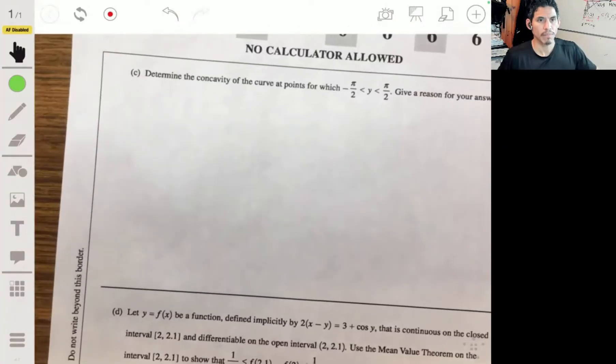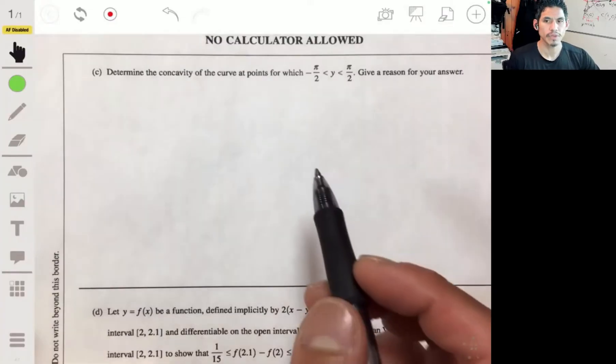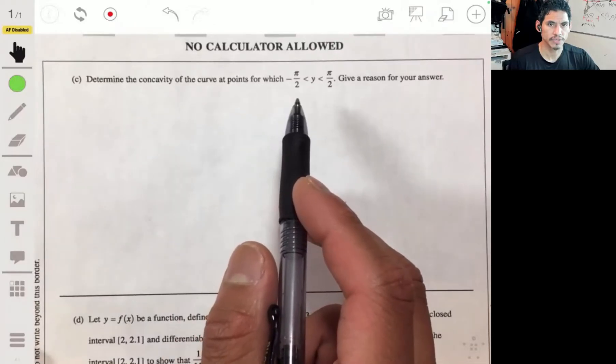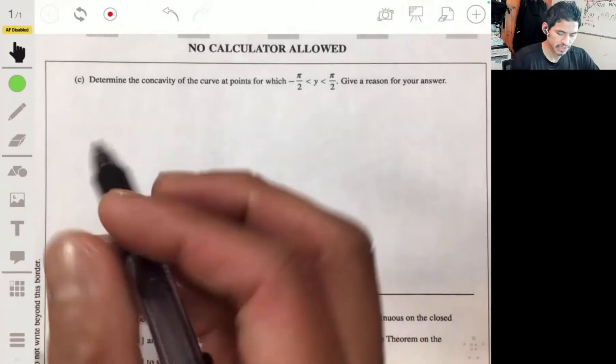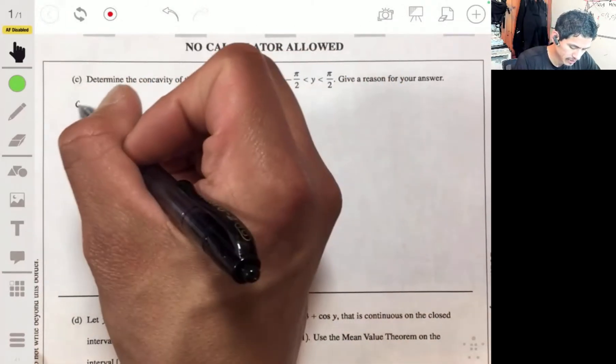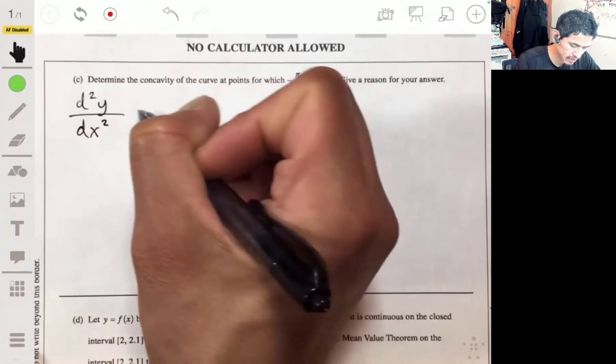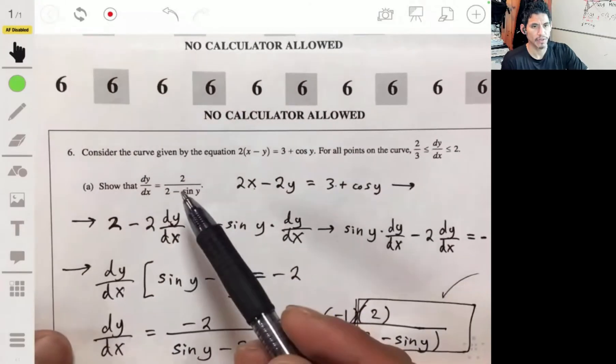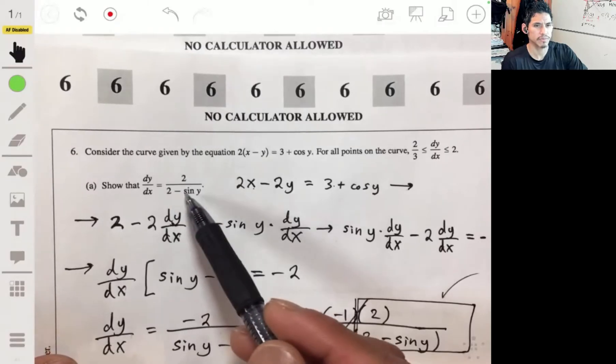All right. Part C. Determine the concavity of the curve at points for which y is between negative pi over two and pi over two. So we want to study the second derivative. We want to find what the second derivative with respect to x is. So then we're going to use again implicit differentiation, but now just take the derivative of the derivative. So we're going to use quotient rule.